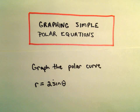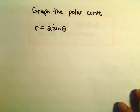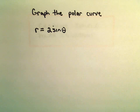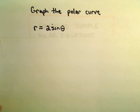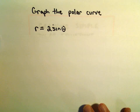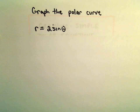Alright, so here we're going to graph this polar curve, r equals 2 sine theta. We could start plotting points, thinking about angles theta, picking values and getting corresponding values for r, and plotting points. What I'm going to do instead is turn it back into a rectangular equation involving x and y coordinates.